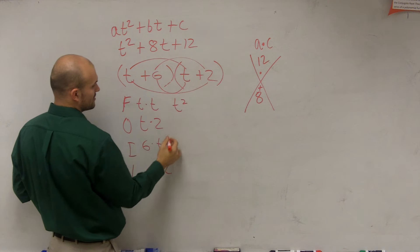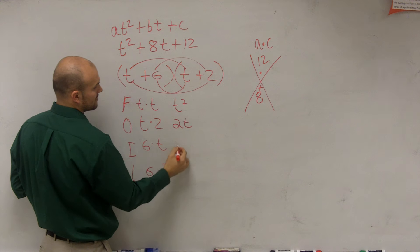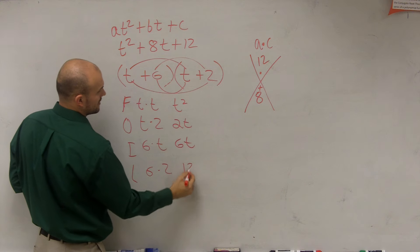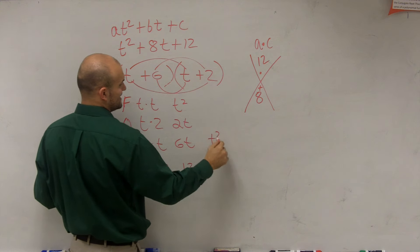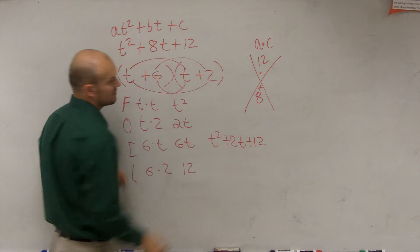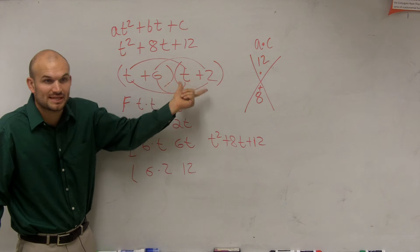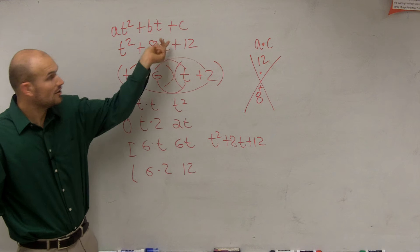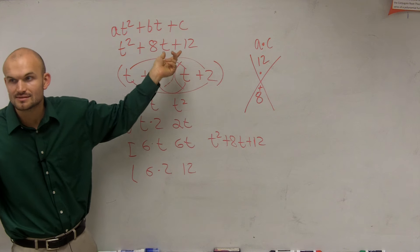So you get t squared, 2t, 6t, and 12, which gives you t squared plus 8t plus 12. So therefore, is this multiplication of this problem? Yes. Yes, it is.